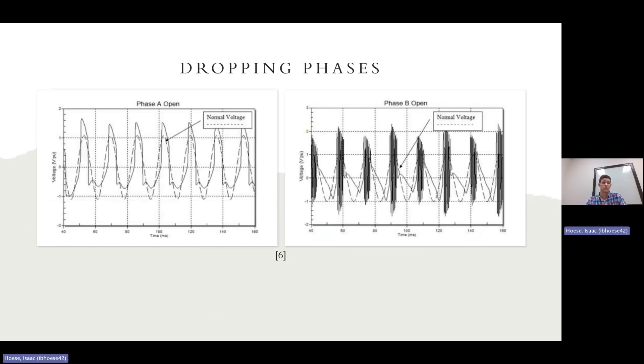And here's the dropping phases, the effects of that. So on the left side, we have phase A is open. And as you can see, it's about 1.5 per unit above, which is still a good amount. And when you open another phase, as you can see in the second graph, it goes all the way above two per unit. This is caused by the core being driven into saturation, and obviously the flux is not canceling out. So when one or two phases are open, it can create havoc on your system.